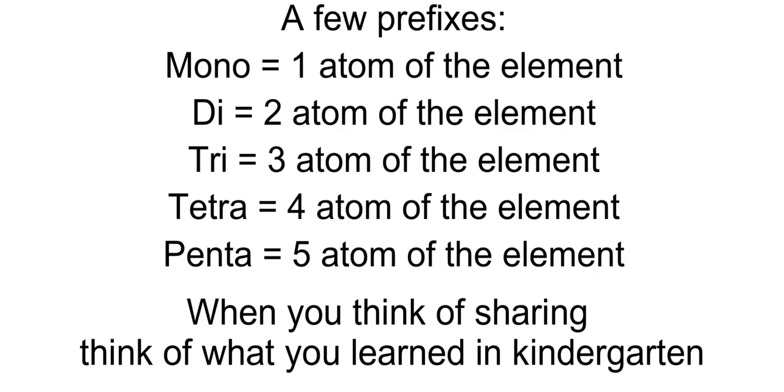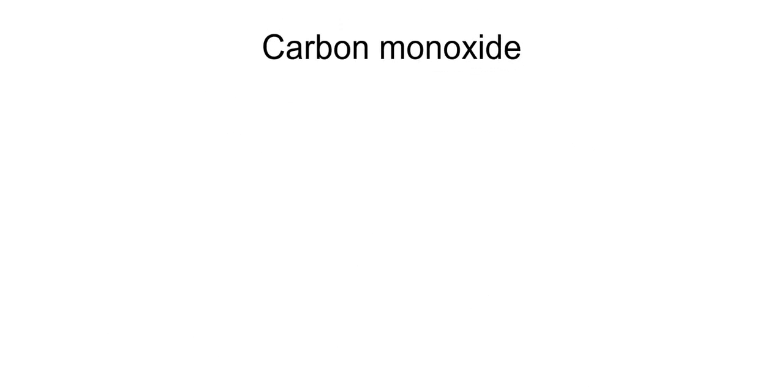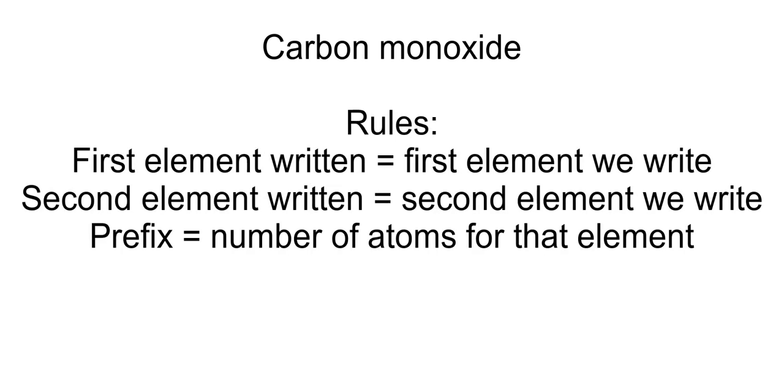We will first go from the name to the formula. Let's look at the name carbon monoxide. When writing the formula the first element that we come across in the name is written first, which means the element that we see second gets written second in the formula.